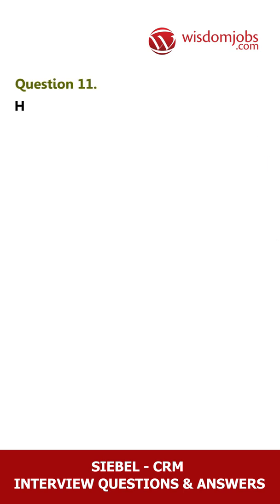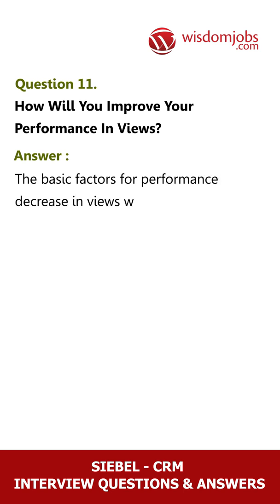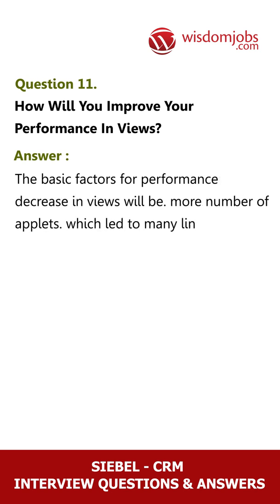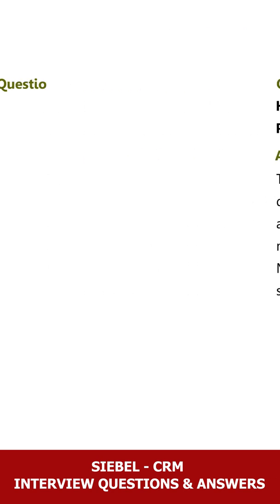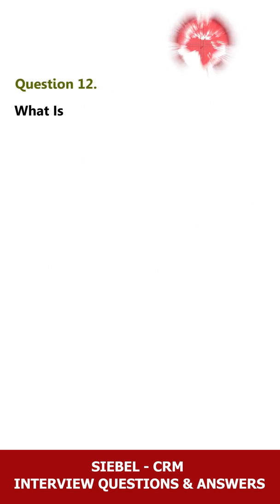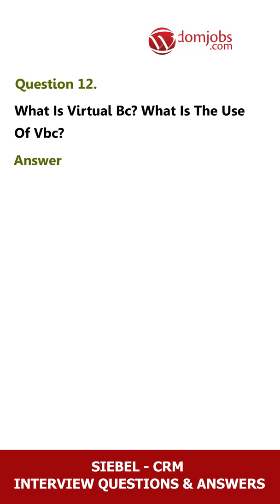Question 11: How will you improve performance in views? Answer: The basic factors for performance decrease in views are: a higher number of applets leading to many links, more joined fields in a single applet, and MVGs which do not have primaries set.